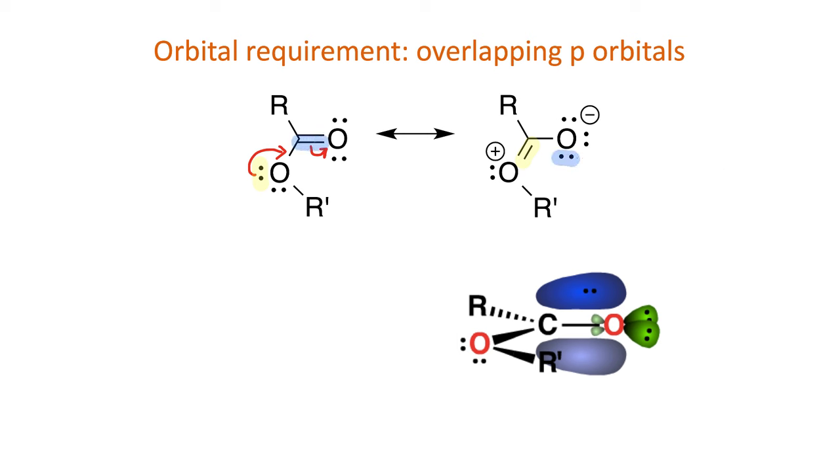To be delocalized, those electrons must be in a p orbital to be part of that delocalized system. The consequence for the oxygen atom is that its hybridization becomes more sp2 like rather than sp3 hybridized.